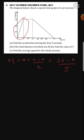Another question says the diagram below shows the speed-time graph for a car journey. Find the acceleration during the first 5 seconds. Acceleration is in this initial area. Acceleration equals final velocity minus initial velocity over time taken. Final velocity is 30, initial is 0, and time taken is 5. So acceleration equals 30 divided by 5, which gives us 6 meters per second squared.